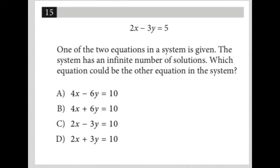So this question starts off with an equation. We have 2x minus 3y equals 5. The question goes on to say one of the two equations in a system of equations is given.